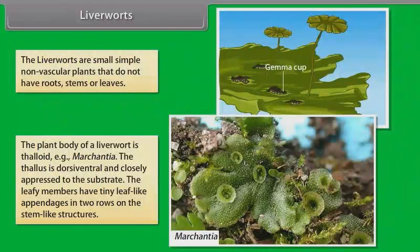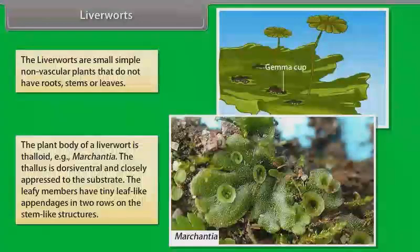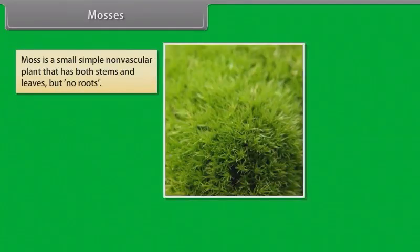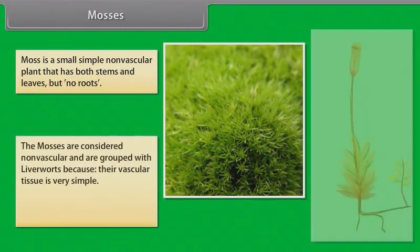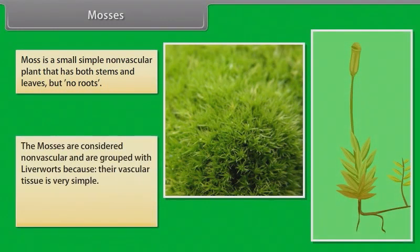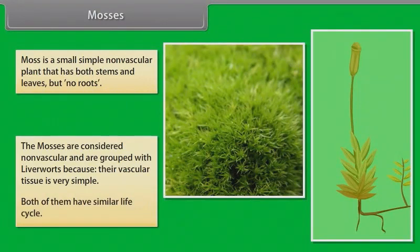The thallus is dorsiventral and closely appressed to the substrate. The leafy members have tiny leaf-like appendages in two rows on the stem-like structures. Mosses are small, simple, non-vascular plants that have both stems and leaves but no roots. They are grouped with liverworts because their vascular tissue is very simple, and both have a similar life cycle.